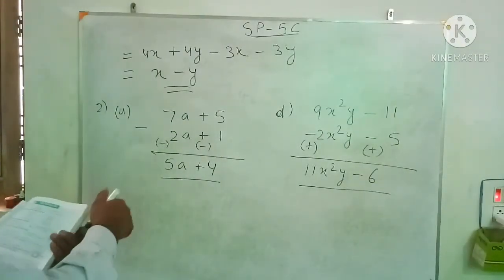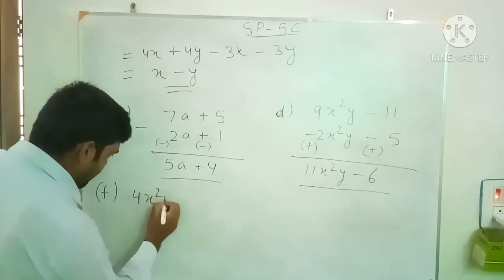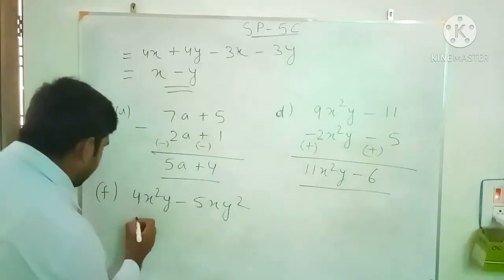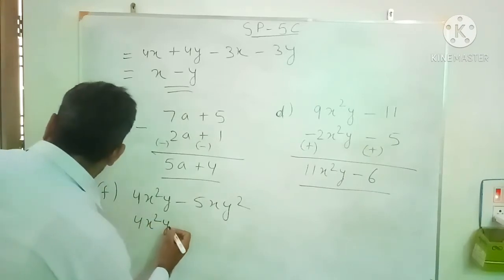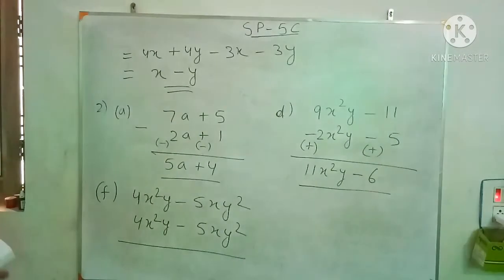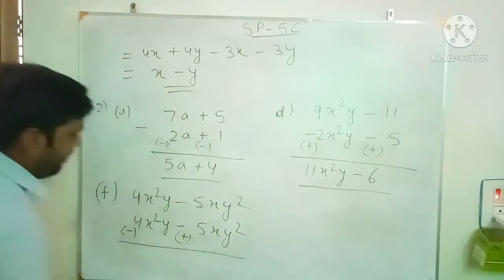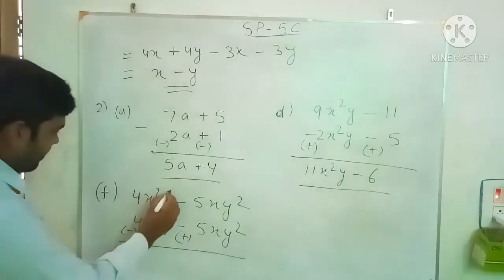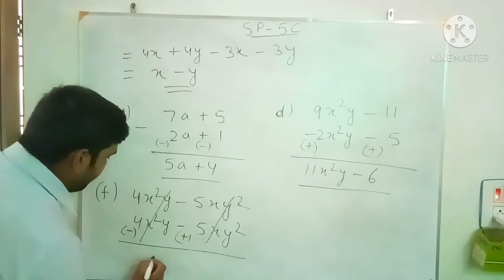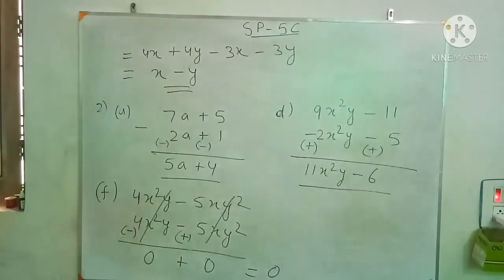Now question 2f. We have to subtract the lower expression, so again change the sign of each term of the lower expression. Plus becomes minus, and minus becomes plus. So 4x²y minus x²y will be cancelled, and minus 5xy² plus 5xy² also cancels out. So the answer is 0.